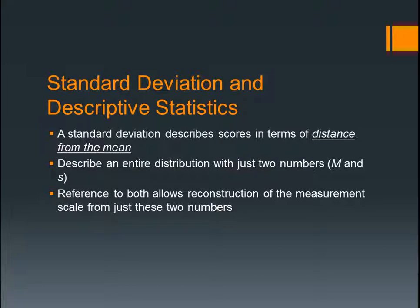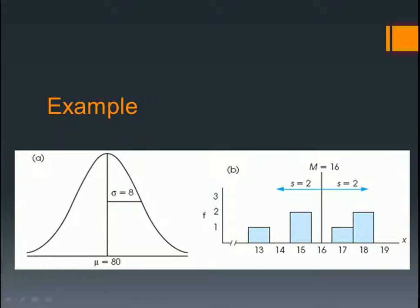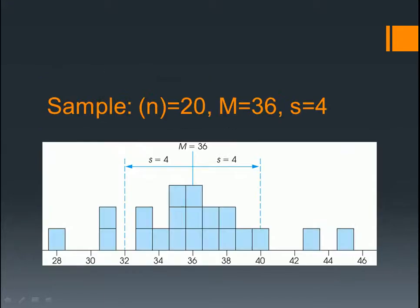Standard deviation and descriptive statistics: a standard deviation describes scores in terms of distance from the mean. We're using M and S here. Here's another example: your mean is 36, you have 20 scores — that's your N — and your standard deviation is 4. Your standard deviation, denoted by the horizontal line, is 4. That dashed line represents its value. So your mean is 36 and standard deviation is 4, which puts you at 40 and 32 on either side.